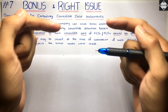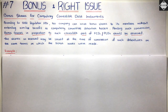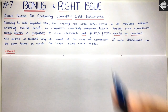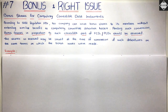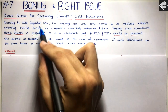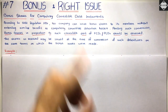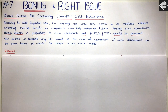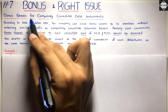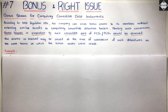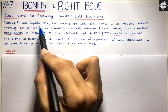What Regulation 294 is trying to tell you is: if a company is going for a bonus issue and in their balance sheet they have compulsory convertible debt instruments, the company has to make sure it doesn't just do a bonus issue to existing shareholders and move on. You have to also give a similar benefit to holders of compulsory convertible debt instruments.